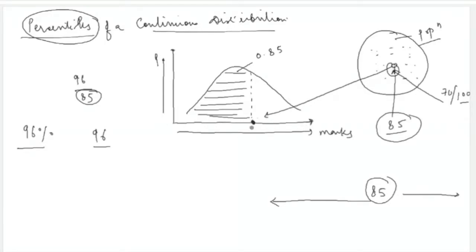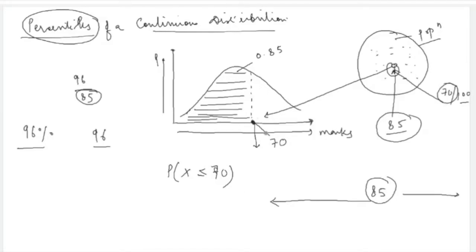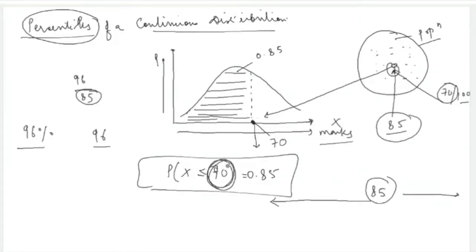That point is called the 85th percentile when the area to the left of it in the distribution is 0.85 — this is what we understood as cumulative probability. For example, if the probability that X is at most 70 marks is 0.85, then we call 70 the 85th percentile of this distribution.